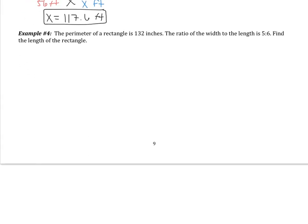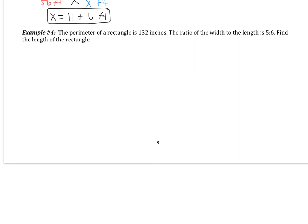Let's now look at example number 4. It says, the perimeter of a rectangle is 132 inches. The ratio of the width to the length is 5 to 6. Find the length of the rectangle. Now, this is a review of last section, but we're going to do it anyway. Let's show ourselves a picture. We have this rectangle that has a perimeter of 132. We're told that the ratio of the width to the length is 5 to 6. Now, that does not mean that the width and the length are 5 and 6. If they were 5 and 6, we wouldn't have a perimeter of 132.